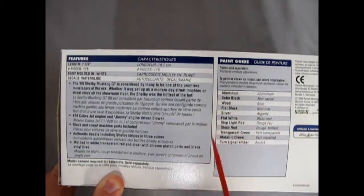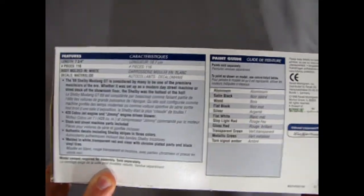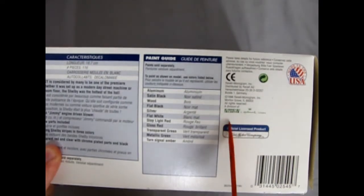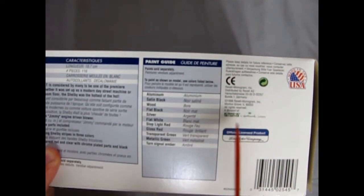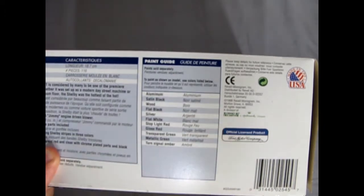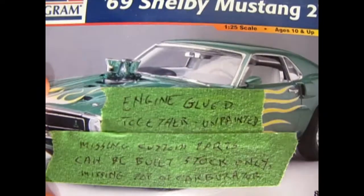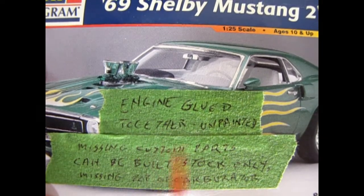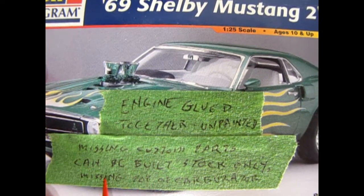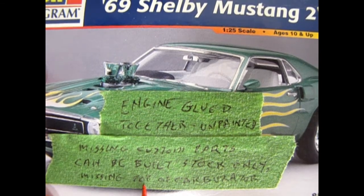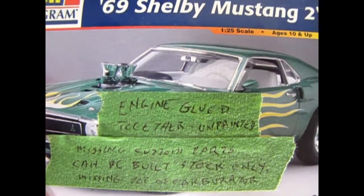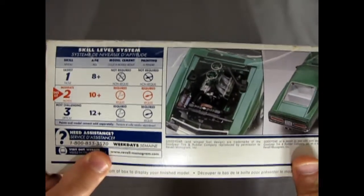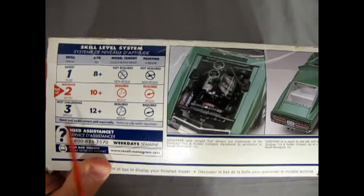Over here we have all the paints that are called out for this. The end of the box has all the little errors in here. Engine glued together, unpainted, missing custom parts. Can be built stock only, missing top of carburetor. So I've got my little issues with this kit. Of course when you find one, hopefully you're not missing anything. Here we have skill level 2, ages 10 and up. Glue and paint is required.